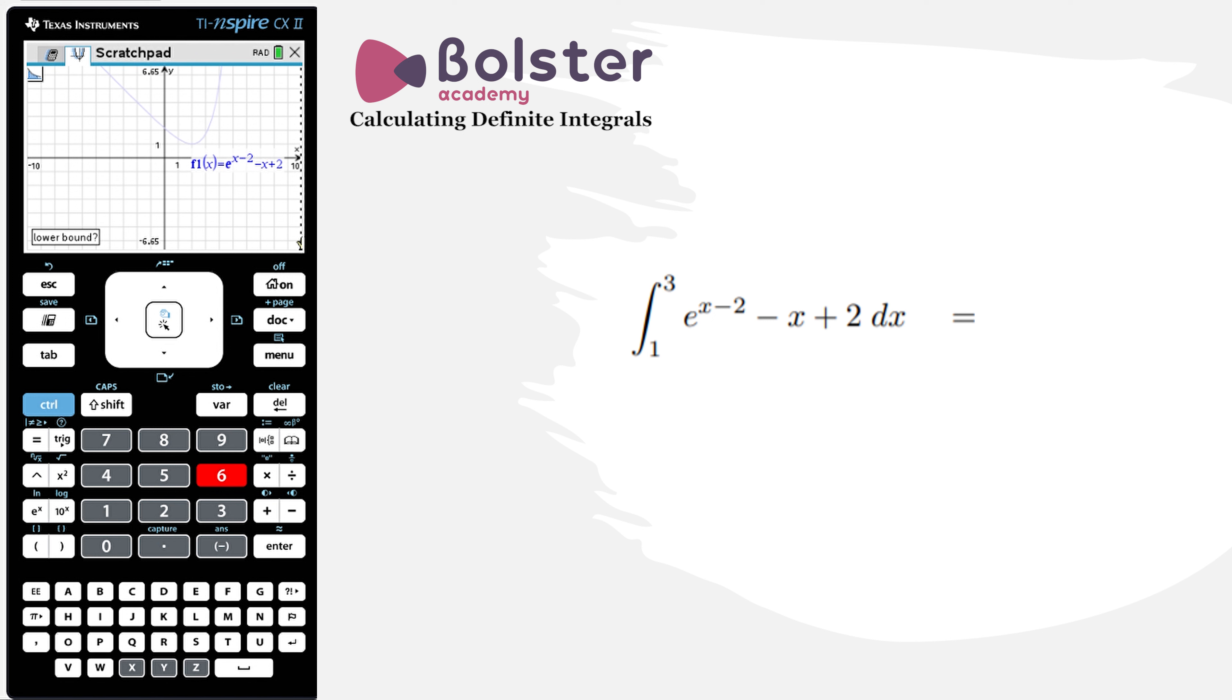My lower bound I just put in 1, I hit enter, and my upper bound I put in 3, and I hit enter. So there we have it. We can clearly see the region that we're calculating and we can see the value for the area of that region. It's 2.35 to 3 significant figures.